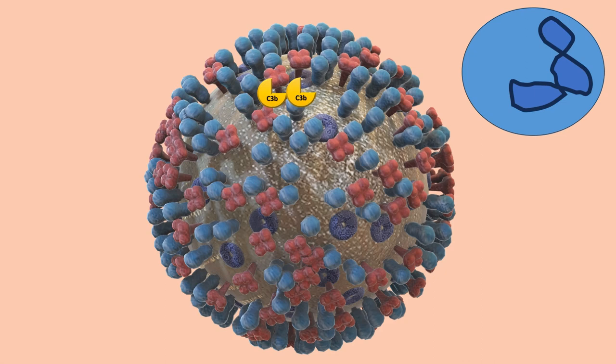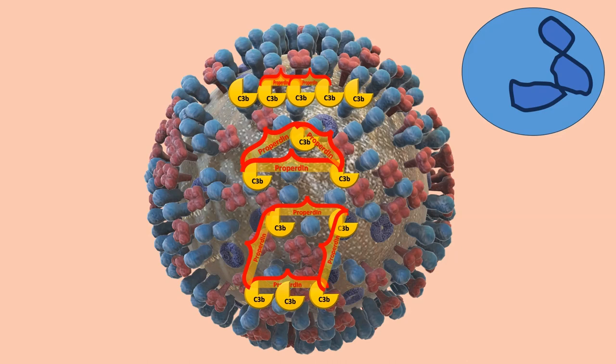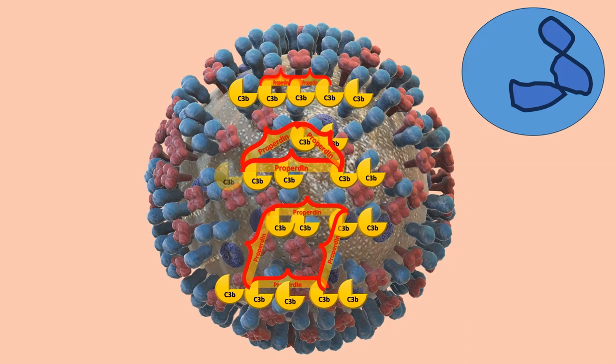The C3BBB complex with the properdin generates the amplification loop of the alternative pathway, continuing cleaving the C3 factor and favoring the binding on the surface. Properdin forms monomers, dimers, trimers, and tetramers which stabilize the convertase on the surface, making it inaccessible for I-factor, membrane cofactor protein and decay accelerating factor action, maintaining the amplification phase of the alternative pathway.